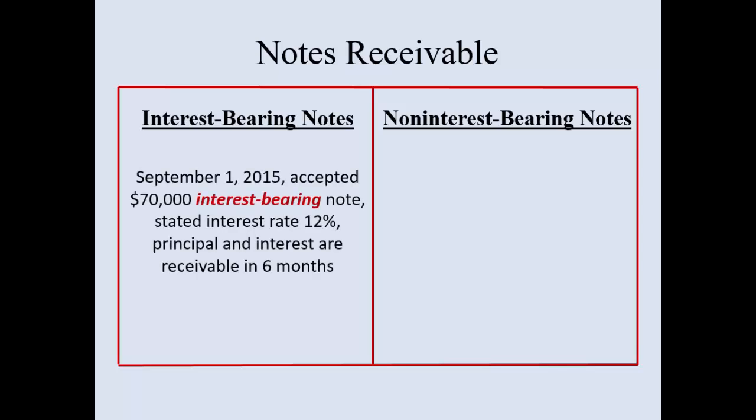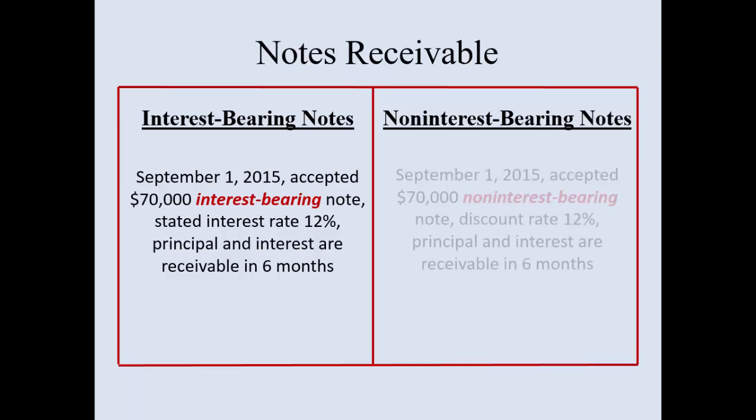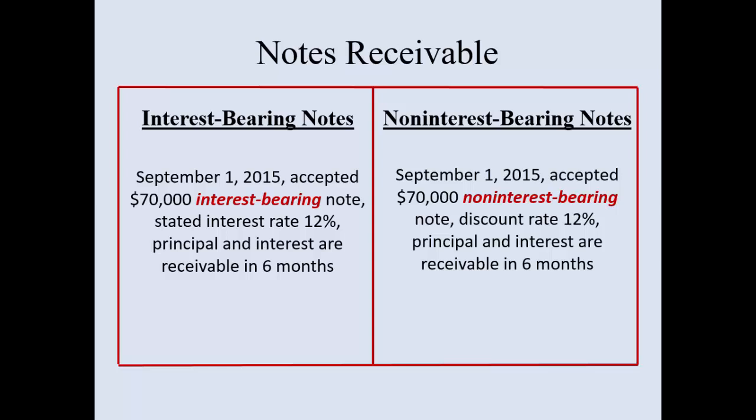Looking at an example: September 1, 2015, you accepted a $70,000 interest-bearing note. The stated interest is 12%; principal and interest are receivable in six months. For the non-interest bearing note, you're given a discount rate of 12% instead of calling it an interest rate — just know that a discount rate really does mean interest rate.